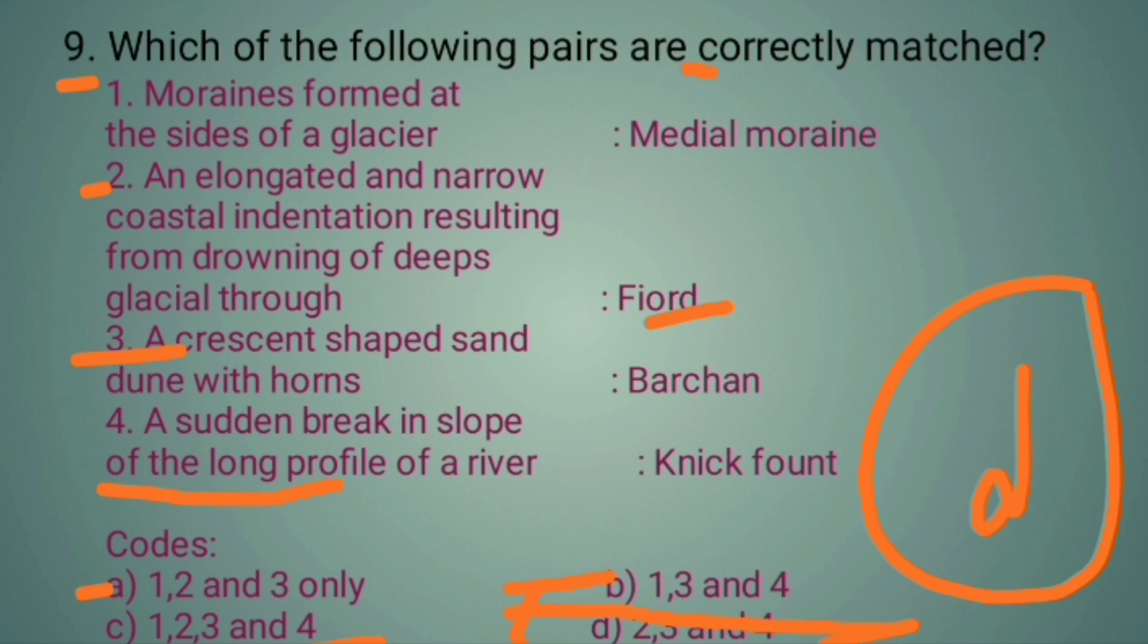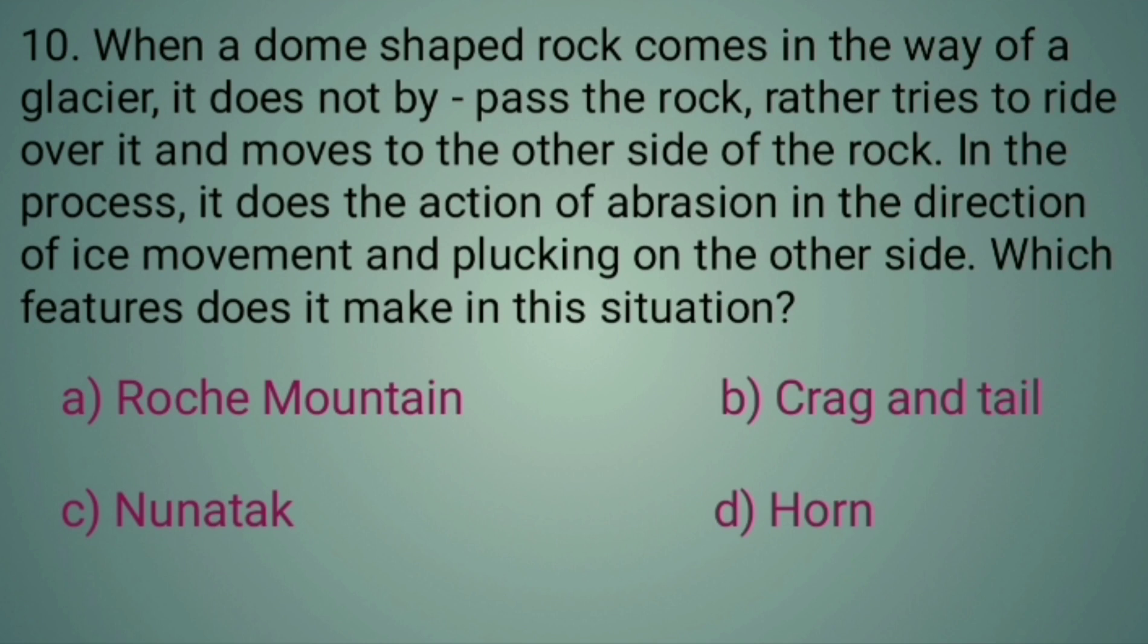The answer is D. The correct pairs are 2, 3, and 4. An elongated and narrow coastal indentation from a glacier trough is called a fjord. A crescent-shaped sand dune is called a barchan. A sudden break in the slope of a river's long profile is called a nick point.